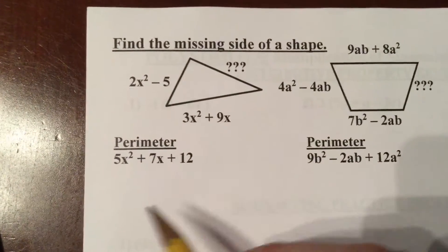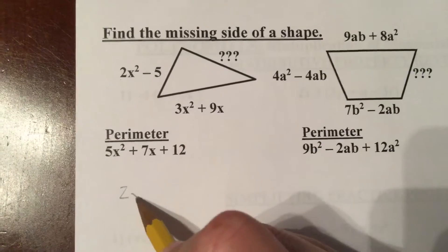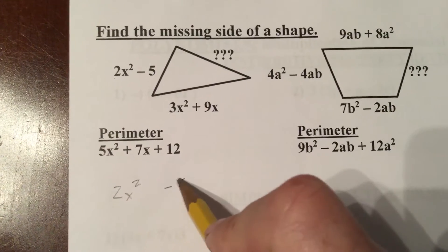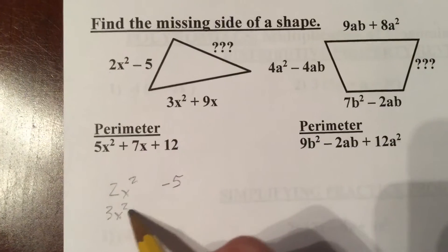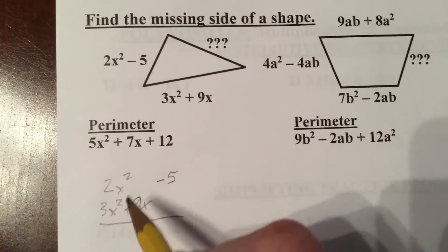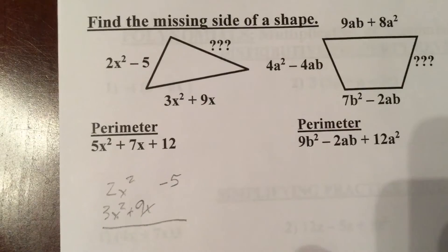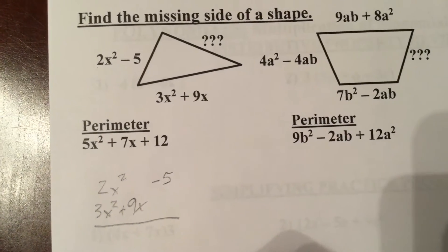Now when it comes to a missing side question, I like to look at what I currently have. So I currently have 2x squared minus 5, 3x squared plus 9x, and then I don't know the third side, but I know that this is the final perimeter.